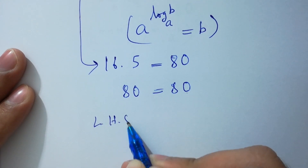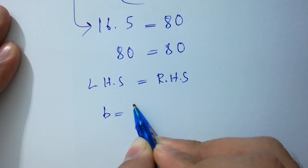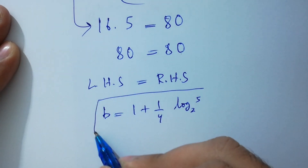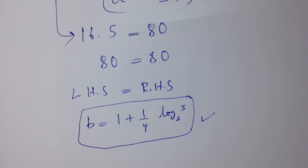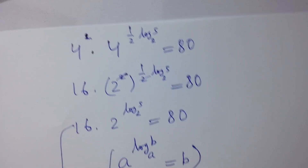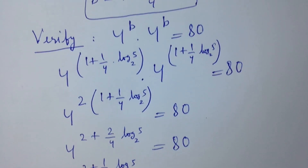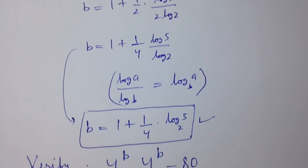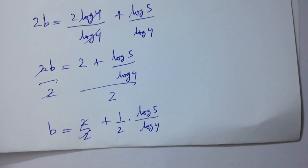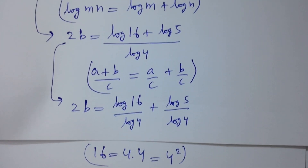Left hand side equals right hand side, which shows that the value of B equals 1 plus 1 over 4 log 5 to the base 2 satisfies the equation. Thanks for watching this video. Please subscribe to this channel to get notifications of new videos, and don't forget to share these videos with your classmates and friends. You can also visit the playlist to learn more, and see the community section for math-related questions. Okay, bye.